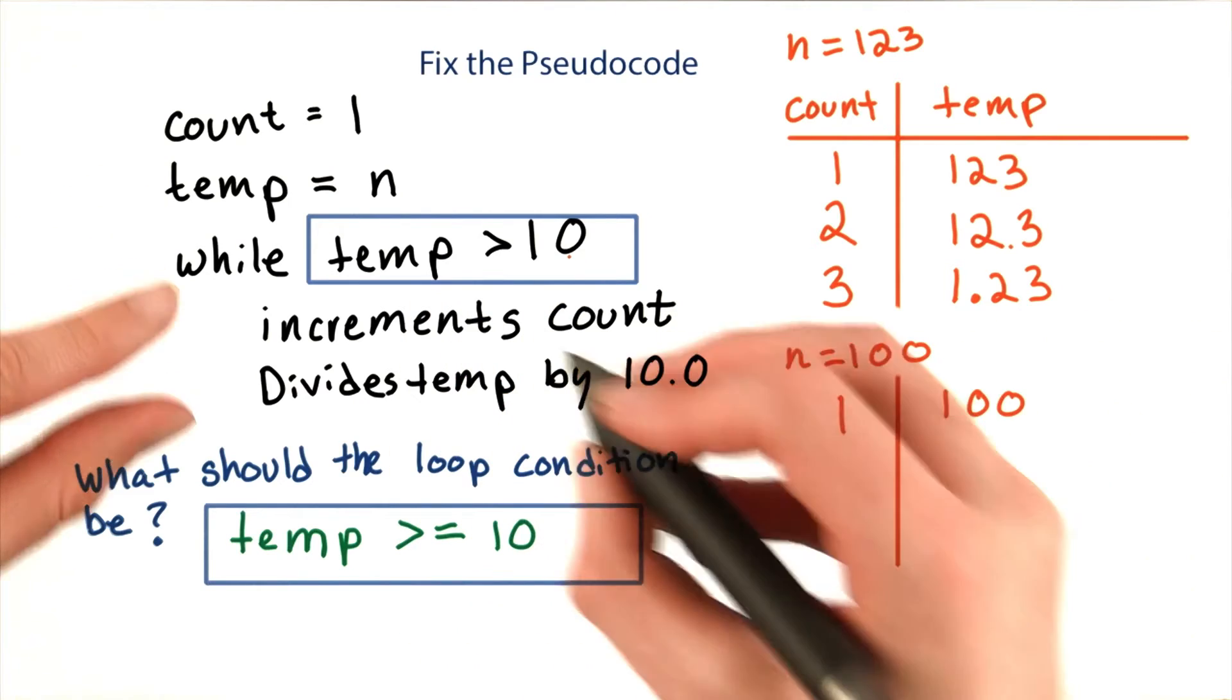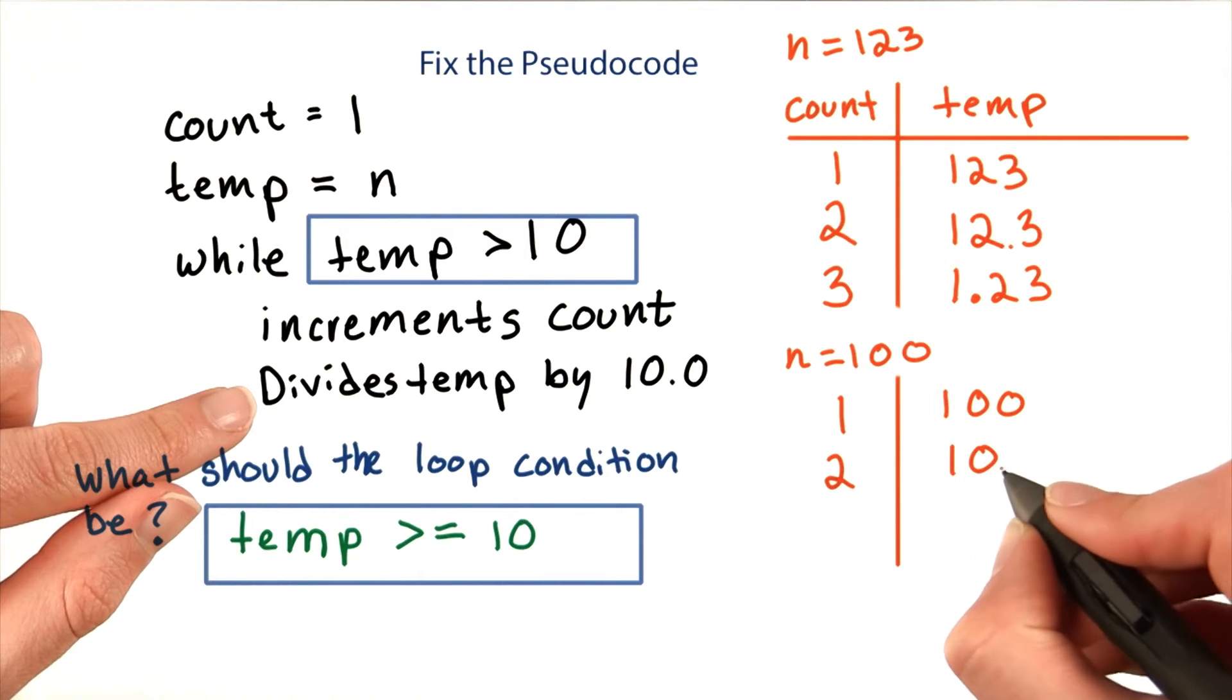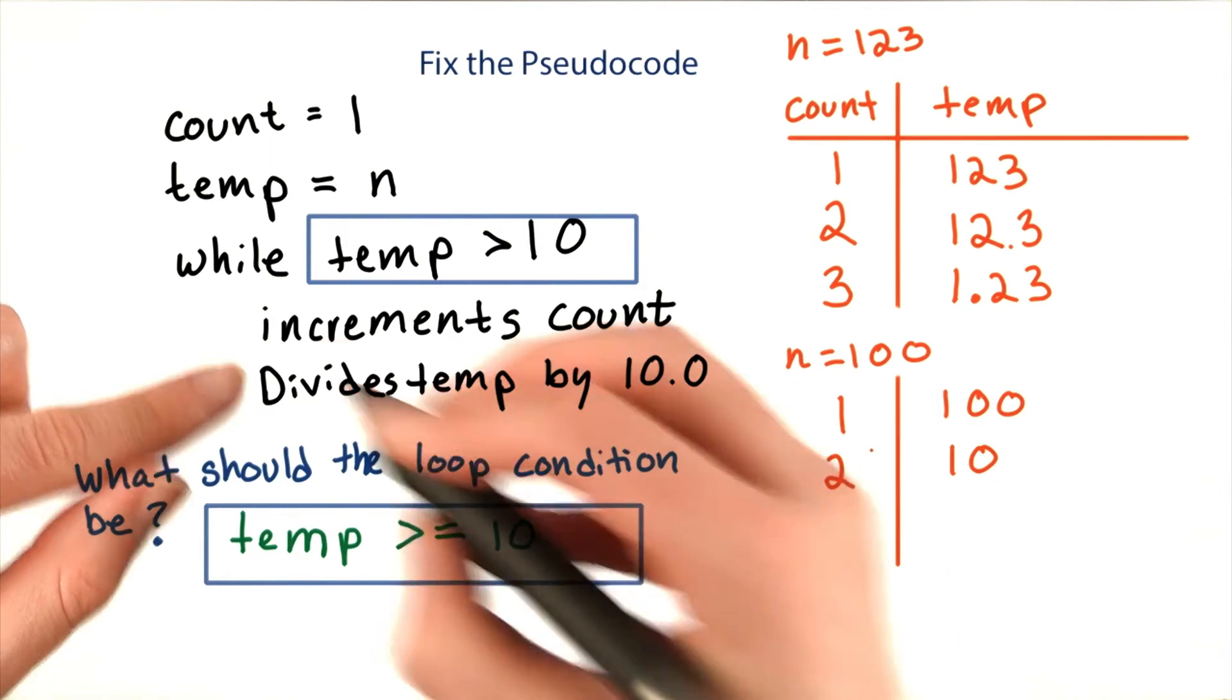Temp is greater than 10, so we would increment count and then divide temp by 10.0, so we would have 10, and then check the condition again.